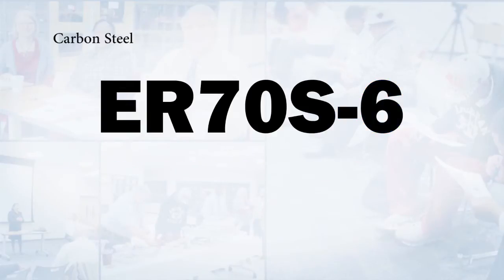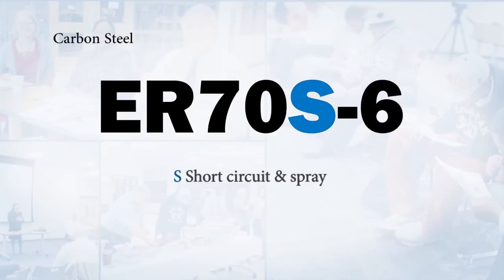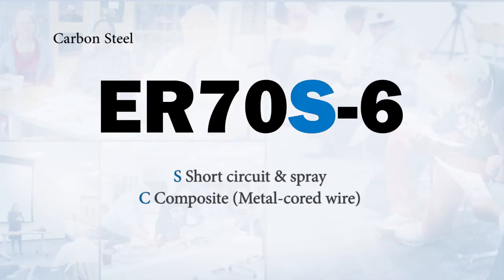A couple things I want to point out: for short circuit and spray transfer, that'll be an S. There is a type of wire called metal cord wire where you'll see a C there, standing for composite. And then when we have a flux core wire, which we'll talk about later, that'll have a T.